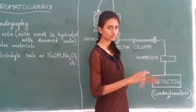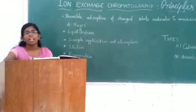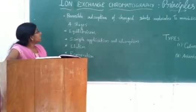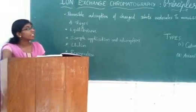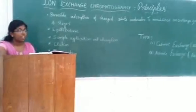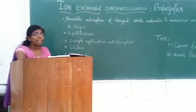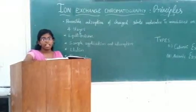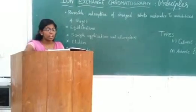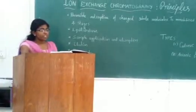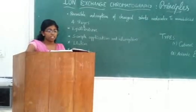The separation in ion exchange chromatography is based on the reversible adsorption of charged solute molecules to immobilized ion exchange groups of opposite charge. It mainly consists of four stages, and the first stage is the equilibrium stage. During this stage, the ion exchanger is brought to a starting stage in terms of pH and ionic strength. It allows binding of desired solute molecules. In this stage, all charged groups of the stationary phase are attached with associated counter ions.